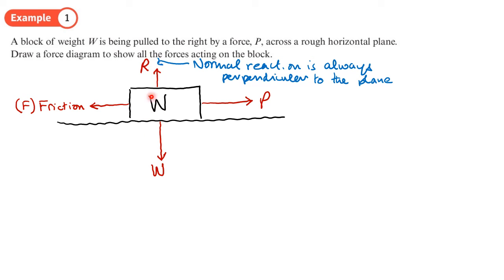So here's my force diagram showing all the forces acting on the block. R and W will be balanced because this object is not moving up or down — these forces are equal and opposite. Moving sideways, depending on whether it's moving or not, those forces may be balanced. Here's my force diagram which I can then use to help me solve problems.